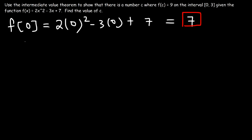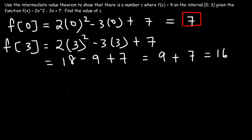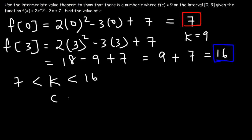So it's going to be two times zero squared minus three times zero plus seven, which is equal to seven. Now let's evaluate the function when x is equal to three. So it's two times three squared minus three times three plus seven. Three squared is nine, and two times nine is 18; three times three is nine; 18 minus nine is nine, nine plus seven is 16. Now, f of c is equal to nine, and nine is the k value. So k is nine, and nine is between 16 and seven. Therefore c, which is an x value, has to be between a and b, so c is between zero and three.